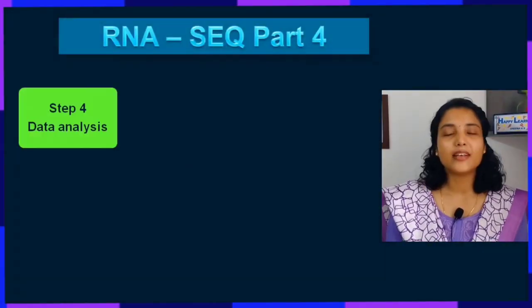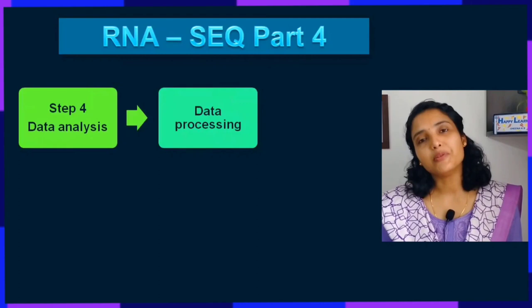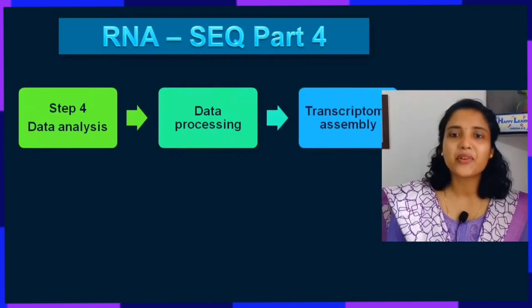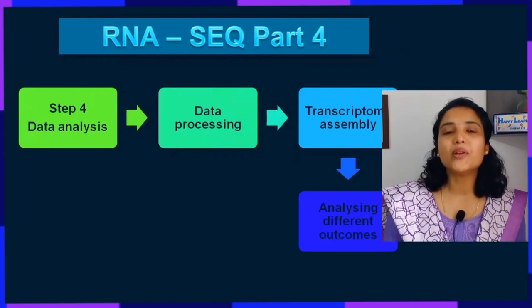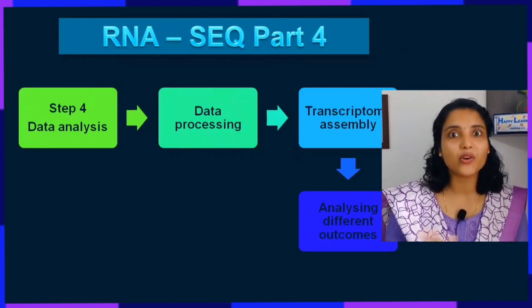RNA-Seq has majorly four steps, out of which the first three steps have been covered in Parts 1, 2, and 3. They were RNA isolation, cDNA library preparation, and next generation sequencing. Step 4 in RNA sequencing is data analysis. Today under data analysis we'll be looking at data processing or pre-processing, transcriptome assembly, and different end goals for our experiment.